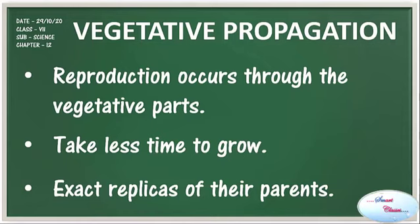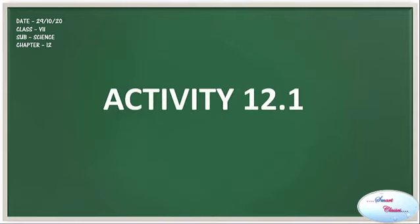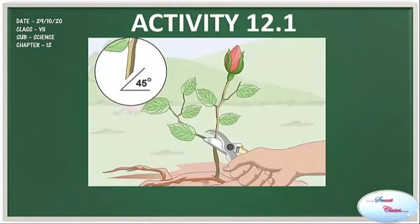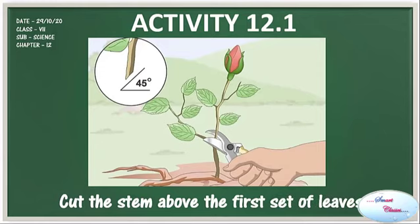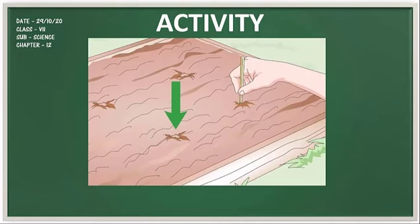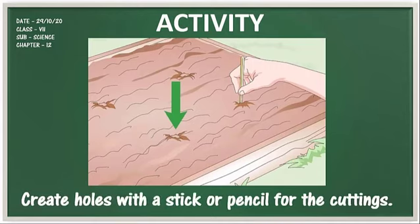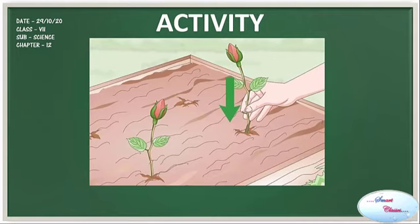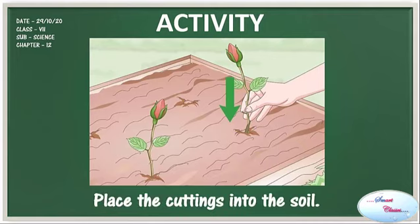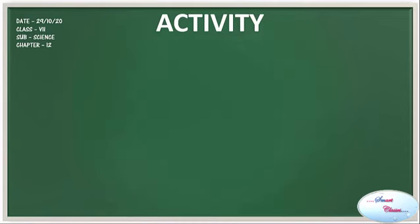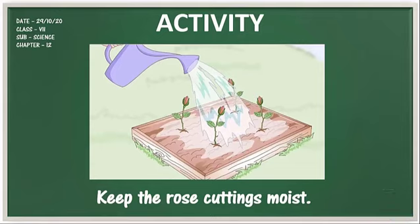Let's understand vegetative propagation with some activities. Activity 12.1: Once you have selected a healthy rose stem, cut the stem above the first set of leaves at a 45-degree angle. Create holes with a stick or pencil for the cuttings in the soil. Make sure the soil is moist. Then place the cuttings into the soil — gently push the cutting down several inches, or half the length of the cutting. Once the cutting is in place, pat down the soil around the stem. Keep the rose cuttings moist and water them frequently.